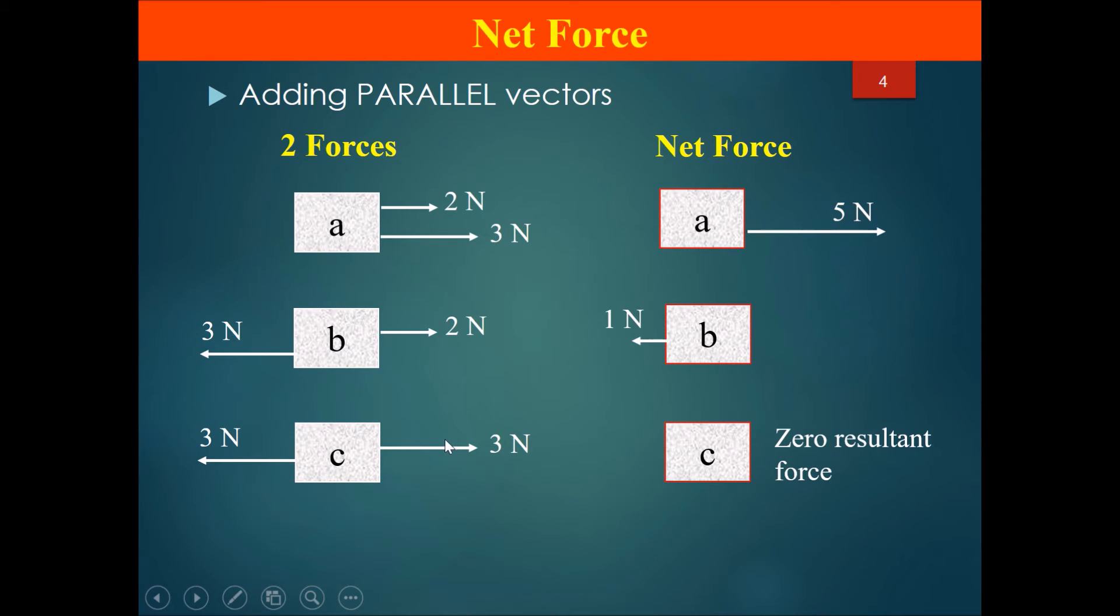This is because if the forces are in opposite directions, three minus three would give you zero, and therefore in the scenario of C, it would be as good as there was no force on C at all.